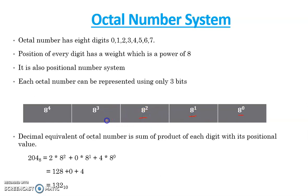Now let's do a calculation. How can an octal number be converted into a decimal number? So this is a number 204 to the base 8.